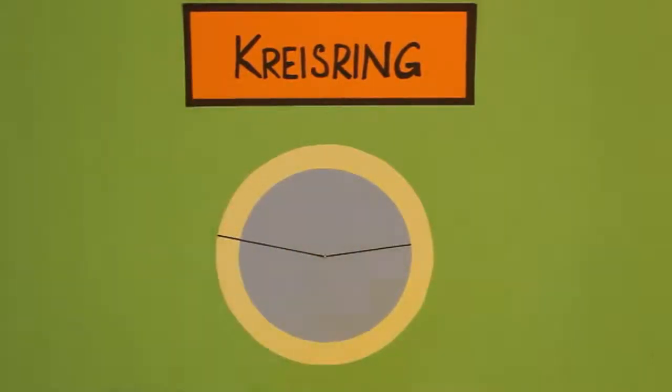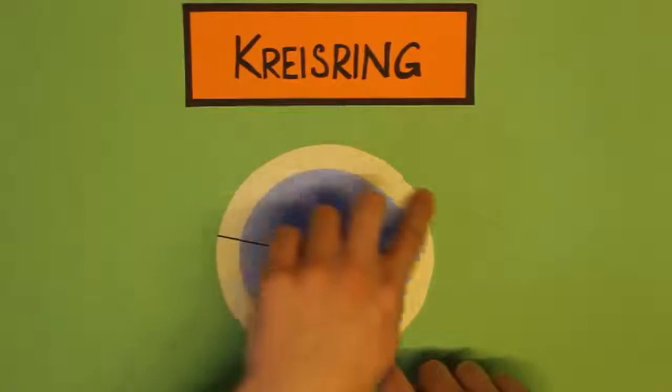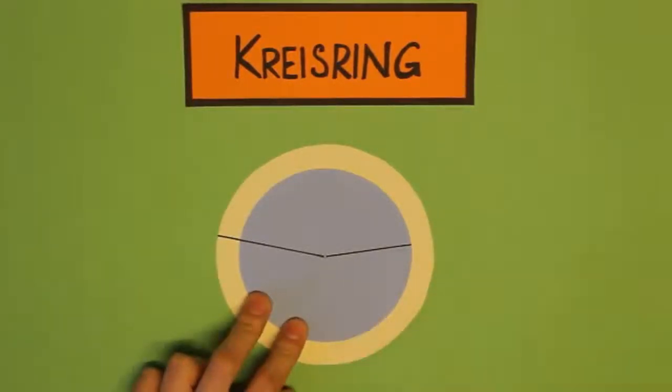Wie ihr sehen könnt, haben wir hier zwei Kreise, die denselben Mittelpunkt haben. Wir haben hier einen kleinen blauen Kreis und einen größeren gelben Kreis. Der gelbe Kreis hat diesen langen Radius und der blaue Kreis hat diesen kürzeren Radius.